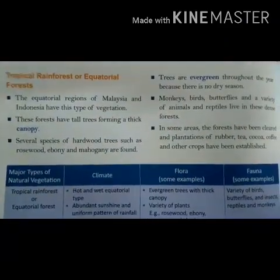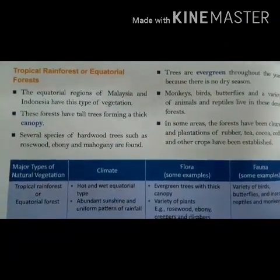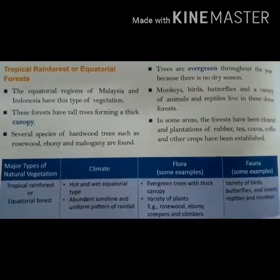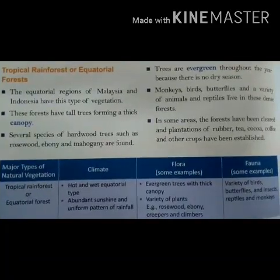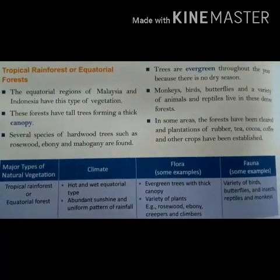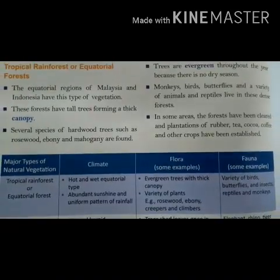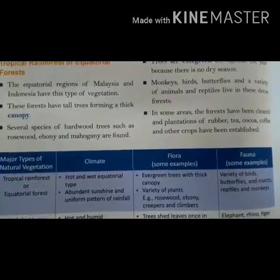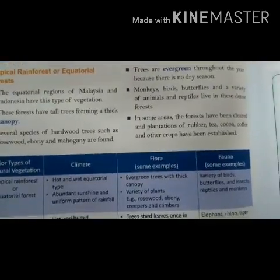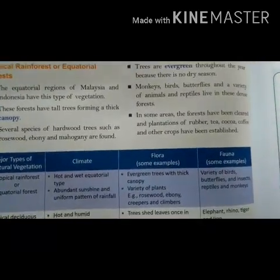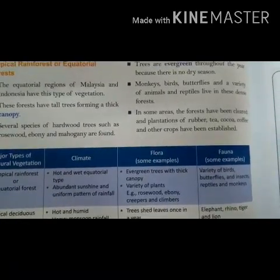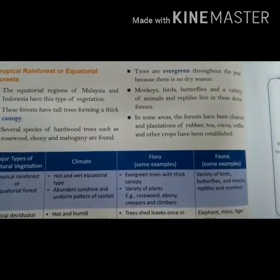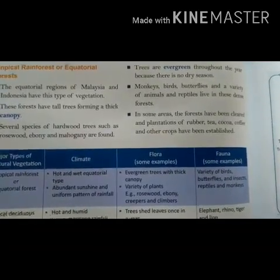Tropical rainforest or equatorial forest is found in Malaysia and Indonesia. These forests have tall trees forming a thick canopy. Species of hardwood trees include rosewood, ebony, and mahogany. The animals found here are monkeys, birds, butterflies, and reptiles. These trees are evergreen throughout the year because there is no dry season.